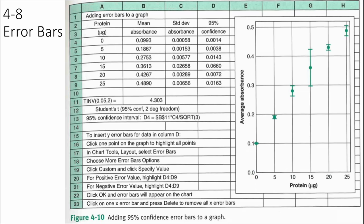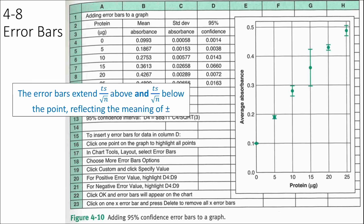One of the applications of confidence intervals is putting error bars on a graph. You may have seen data plotted with a data point in the middle and little bars that stick out above and below — these bars tell you something, in this case the 95% confidence interval. This measurement of 15 micrograms of protein had a much bigger standard deviation, so the 95% confidence interval is a lot wider. You can put this in your plots in Excel.